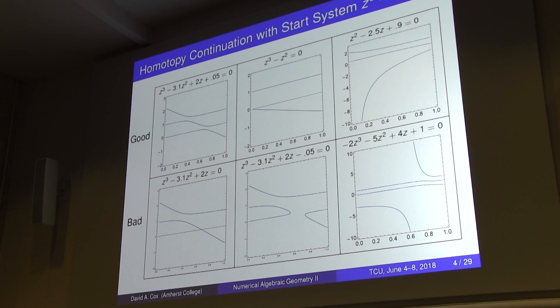Another case: my start system is cubic, my target system is quadratic with two roots. One root has to go away, and it does so by going to infinity. You might say this is silly — if you want to solve a quadratic, start with a quadratic. But there are lots of cases where a system intrinsically has some roots at infinity, and this idea that some solutions go to infinity is an intrinsic part of the homotopy continuation process.